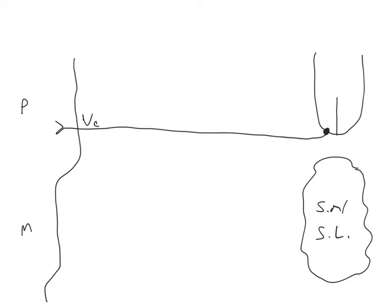As you can predict, that implies that the mandibular division of the trigeminal nerve is going to provide a conduit for parasympathetic fibres to get to the salivary glands. We also need to draw on the ganglion associated with the mandibular division of the trigeminal nerve — this is the submandibular ganglion, which is associated with 5C.